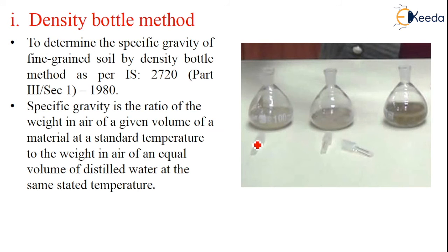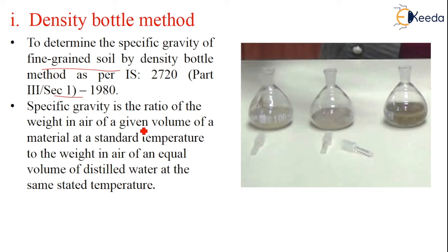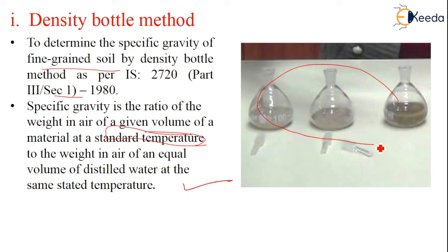The density bottle method is used to determine the specific gravity of fine-grained soil as per IS 2720 part 3 section 1, 1980. Specific gravity is the ratio of the weight in air of a given volume of a material at standard temperature to the weight in air of an equal volume of distilled water at the same temperature. This is the equipment used in the density bottle method.